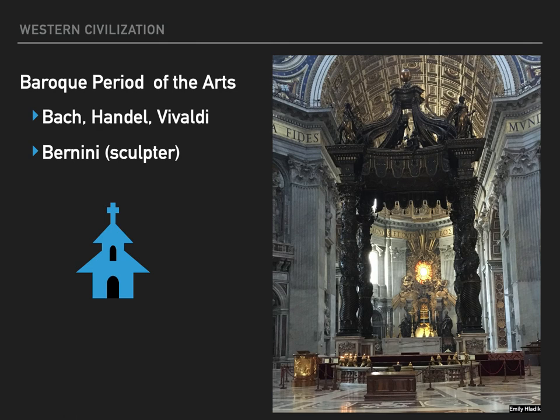In the Baroque period of the arts, around 1600, art became the public relations tool by which the Catholic Church battled the Protestants. It's fantastic art, but the church went Baroque paying for it. Bach, Handel, and Vivaldi filled the cathedrals with beautiful music. Bernini's sculptures — this is the interior of St. Peter's Basilica at the Vatican — include a canopy some eight stories tall that sits above the crypt of St. Peter and below the dome of Michelangelo. The lettering on the walls around the canopy is six feet tall. Since you'll be at the Vatican to see the Sistine Chapel anyway, give yourself a few extra hours to spend at St. Peter's too.